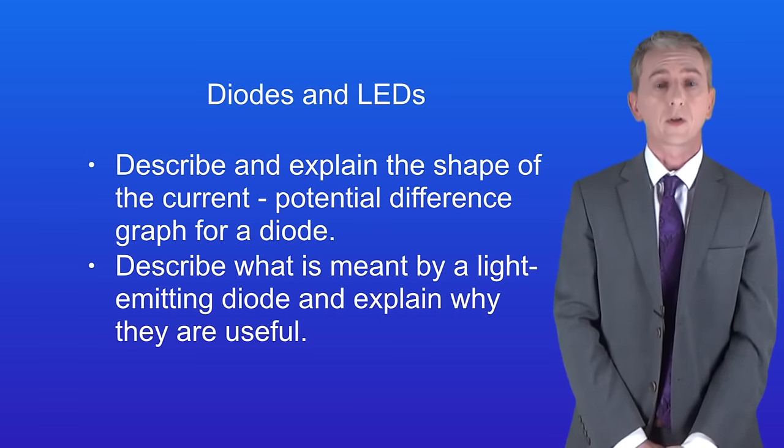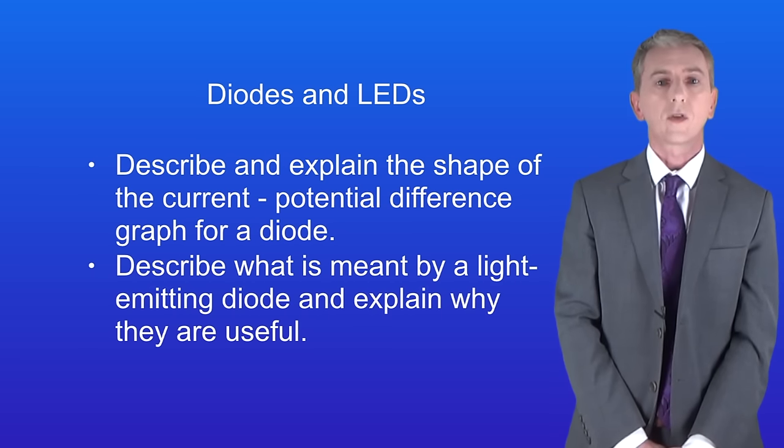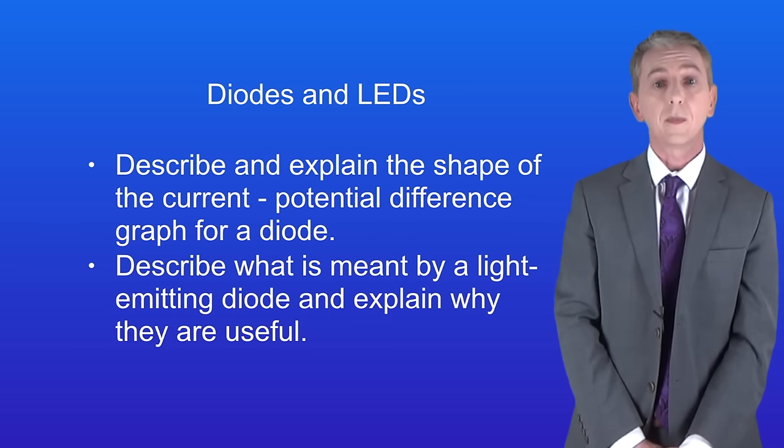Okay, so hopefully now you should be able to describe and explain the shape of the current potential difference graph for a diode. You should then be able to describe what's meant by a light emitting diode, and explain why they're useful.